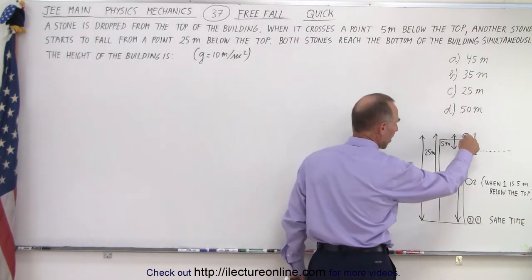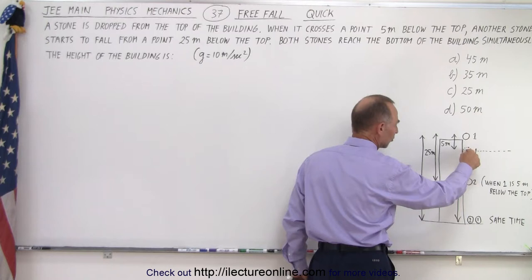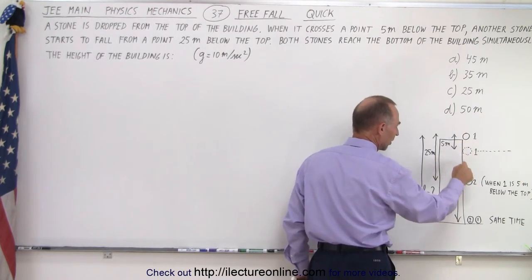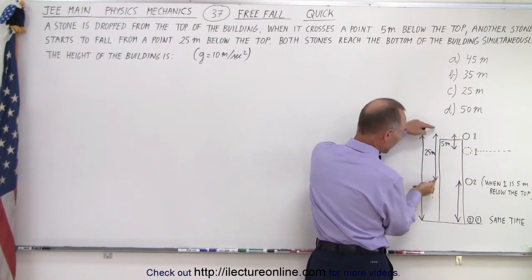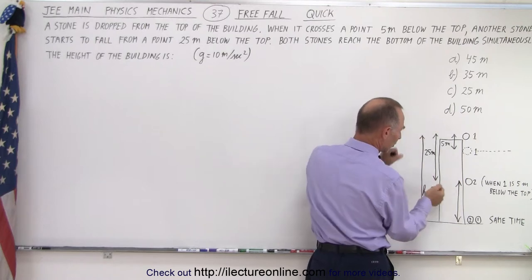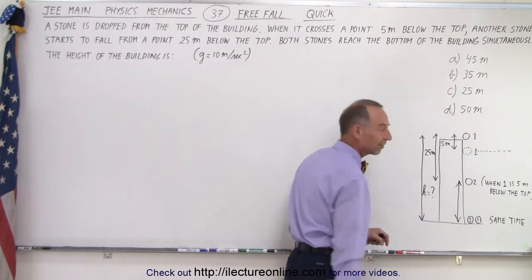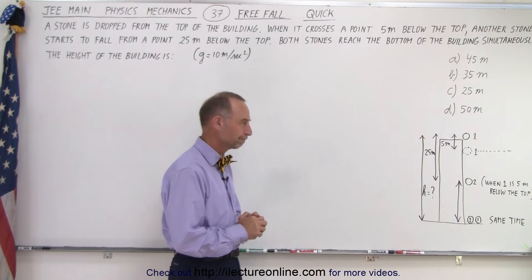So, stone one is dropped, and when it reaches 0.5 meters below from where it's dropped, a second stone is dropped 25 meters below the top, and they both hit the ground at the same time. How high is the building?